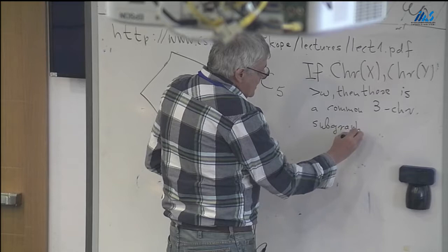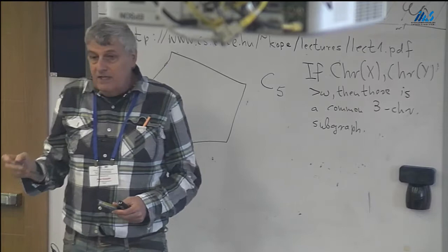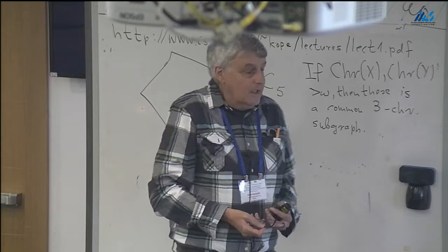Circuits obviously have chromatic number 3, so we have the following corollary: if the chromatic number of two graphs X and Y are both uncountable, then there is a common 3-chromatic subgraph. Any two uncountable chromatic graphs contain the same — there is a 3-chromatic subgraph appearing in both, namely any sufficiently long odd circuit.